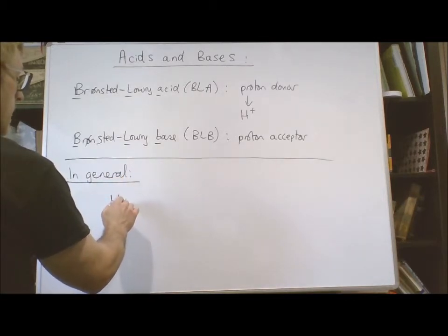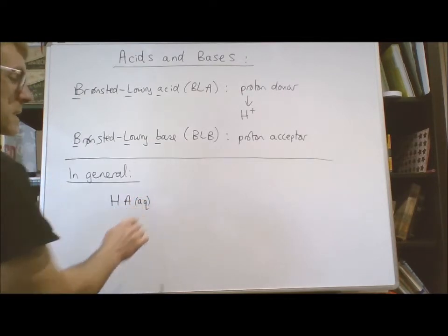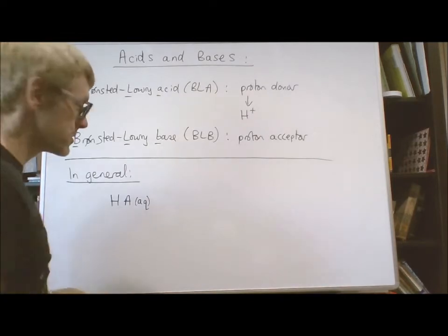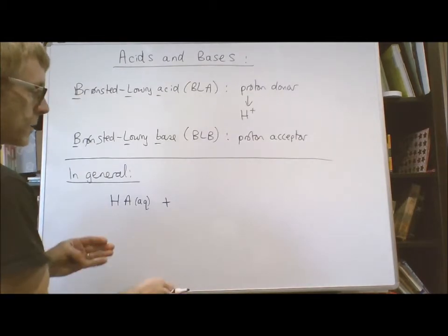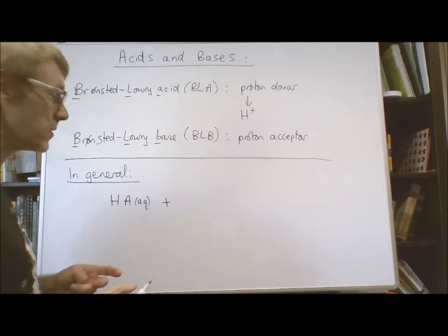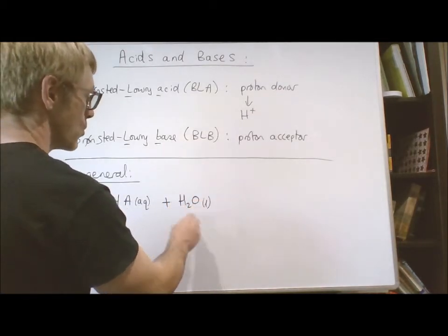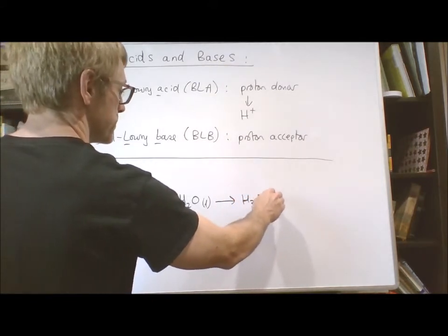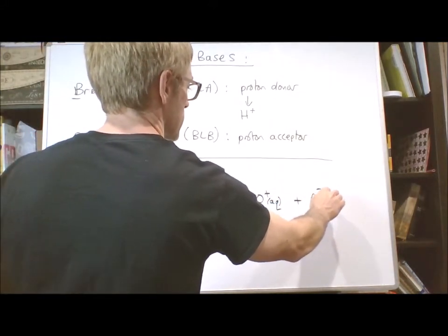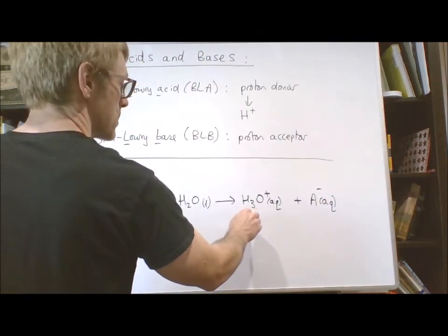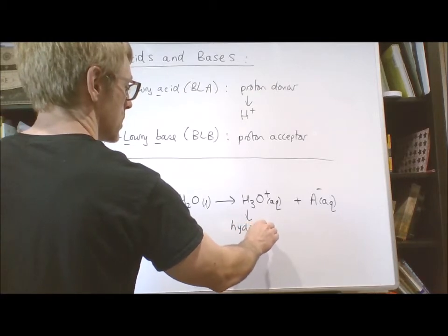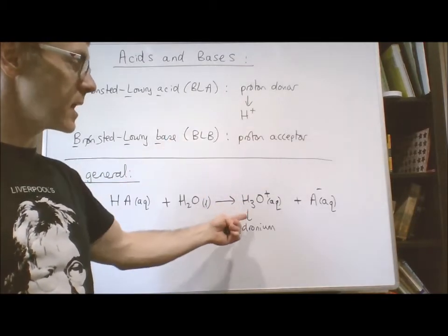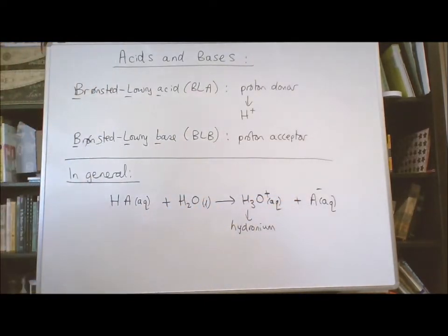We can write a Brønsted-Lowry acid as HA(aq), where AQ just means aqueous — dissolved in water. When we put this acid in water (liquid), it gives us the hydronium ion H₃O⁺ and the counter anion A⁻. Hydronium is essentially a water molecule with a proton: H₂O + H⁺ gives H₃O⁺, and A⁻ is the counter ion from the acid. This is a generic equation.